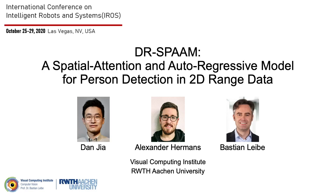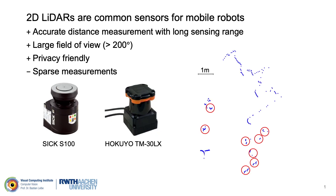We present DRSPAN, a spatial attention and autoregressive model for person detection in 2D range data. 2D LiDARs are common sensors for mobile robots. They provide accurate distance measurements with long sensing range and have a large field of view, typically greater than 200 degrees. Furthermore, unlike cameras, they are not privacy intrusive. These advantages make them appealing sensor choices for many robotic tasks, including person detection.